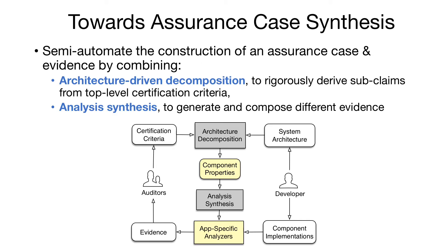To address these challenges, our goal is to semi-automate the construction of an assurance case, as well as the generation of evidence. We're going to do this by combining two different types of reasoning: one at the level of architecture, to automatically derive subclaims from the top-level certification criteria, and second at the level of implementation, to automatically generate and compose different types of evidence.